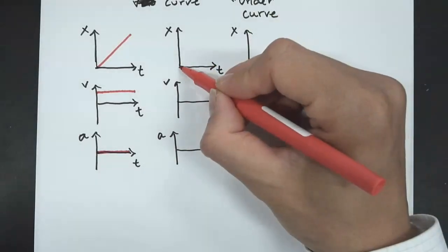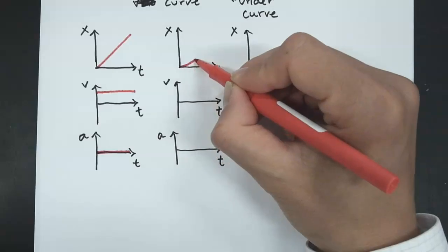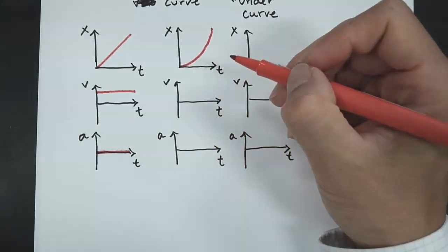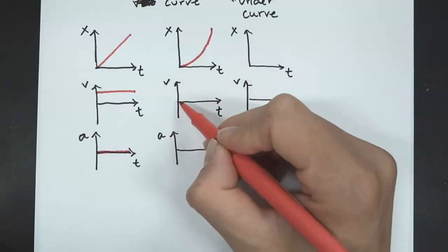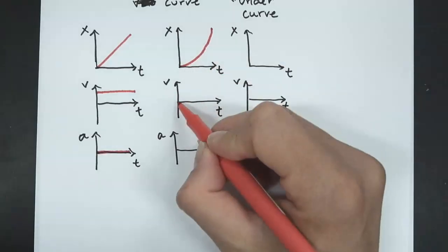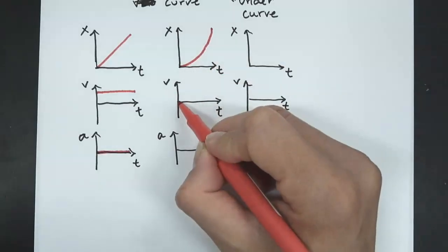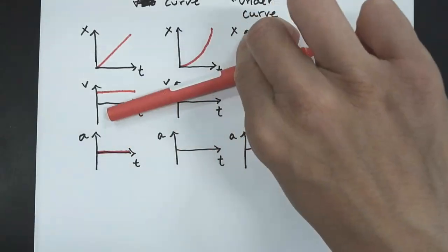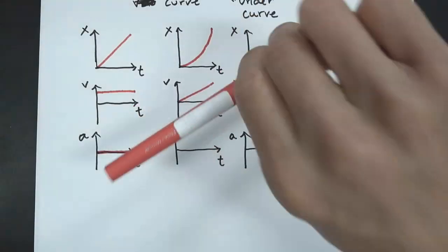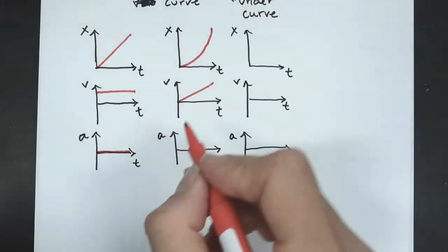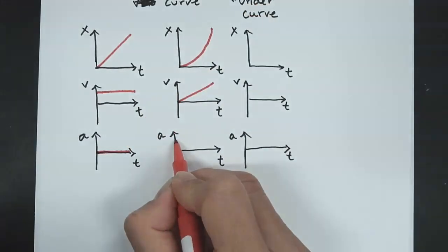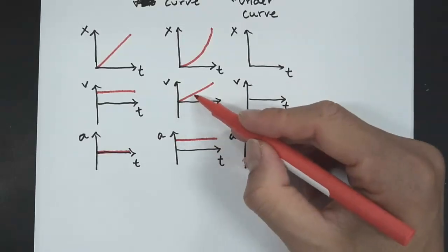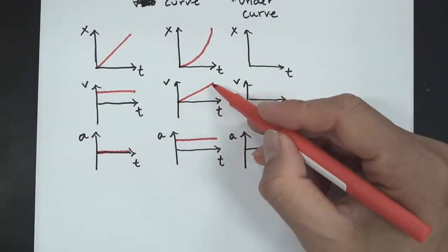Next we'll look at an object that is speeding up — this could be like a ball rolling down a ramp. The velocity is increasing, getting steeper and steeper. The slope of this position graph is a positive slope, and it's a straight line on the velocity graph, so it's going to be a constant acceleration. The velocity is increasing at a constant rate.